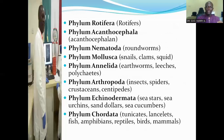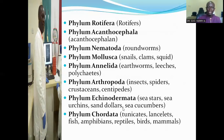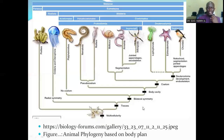Then the phylum Rotifera, which has the rotifers; the phylum Acanthocephala; the phylum Nematoda, which has the roundworms; the phylum Mollusca, which has snails, clams, squids, and octopuses; the phylum Annelida, which has earthworms and leeches; the phylum Arthropoda, which has insects, spiders, and crustaceans; the phylum Echinodermata, which consists of sea stars, sea urchins, sand dollars, and sea cucumbers; and the phylum Chordata, which has tunicates, lancelets, fish, amphibians, reptiles, birds, and mammals.